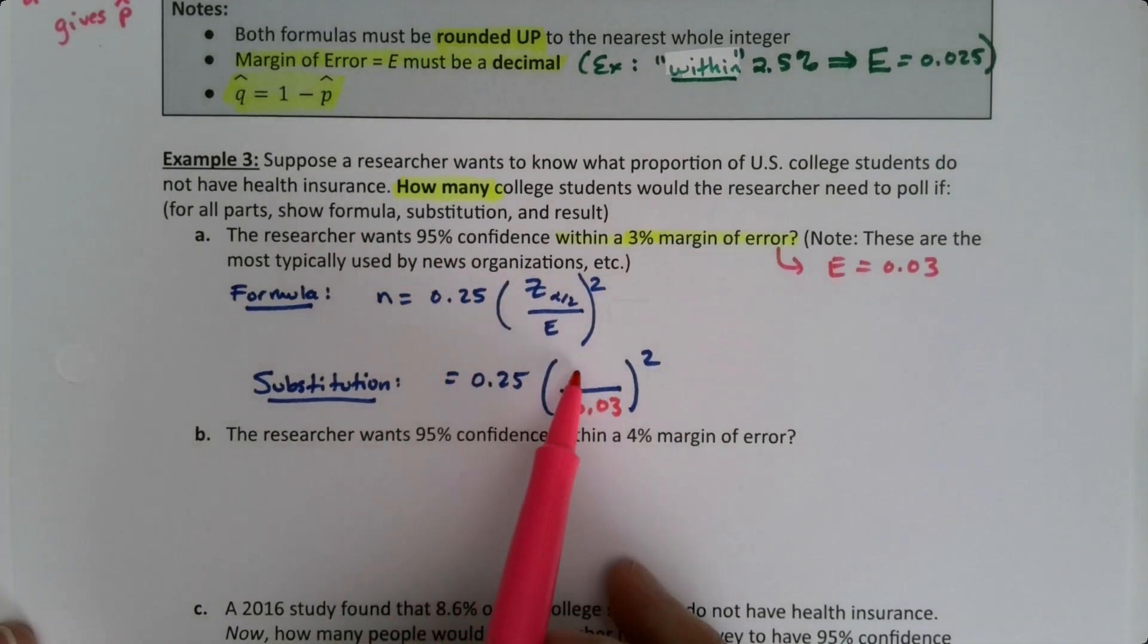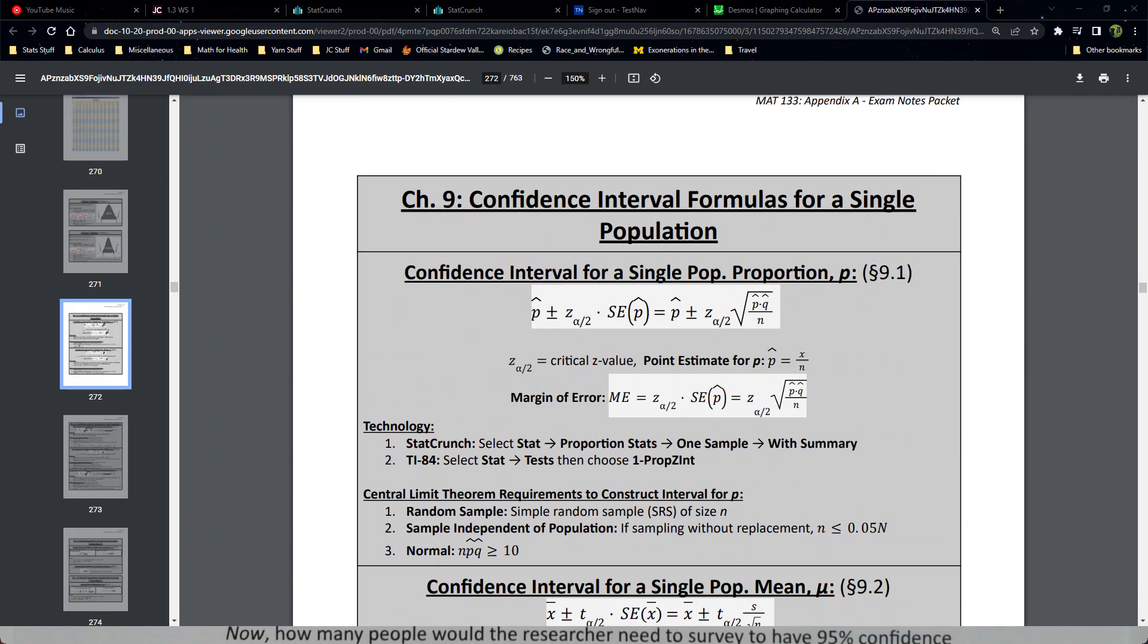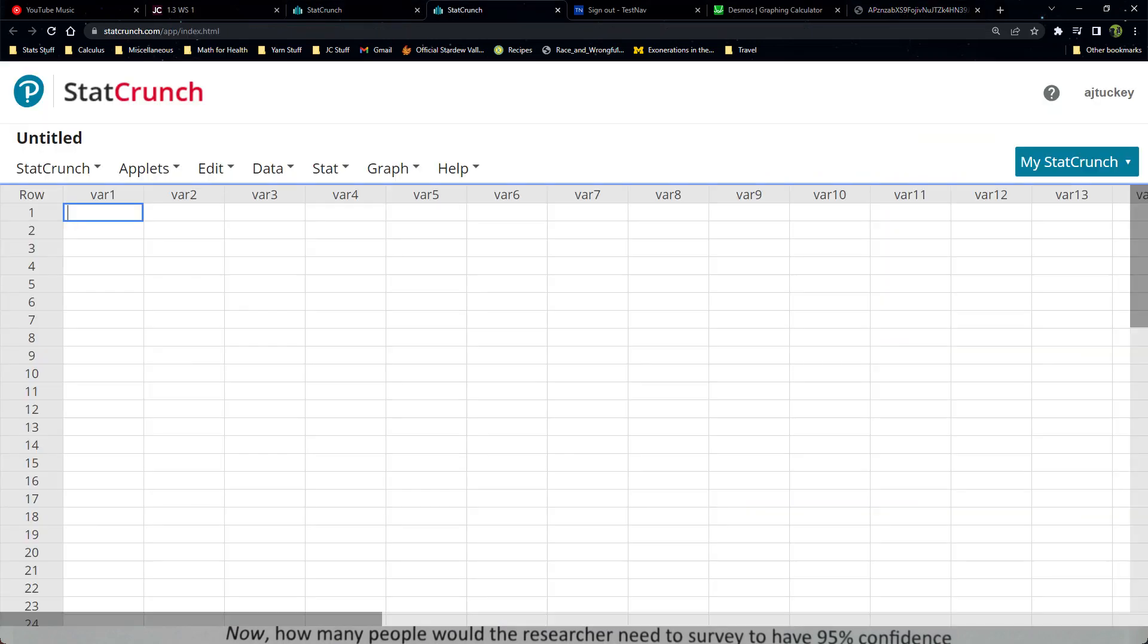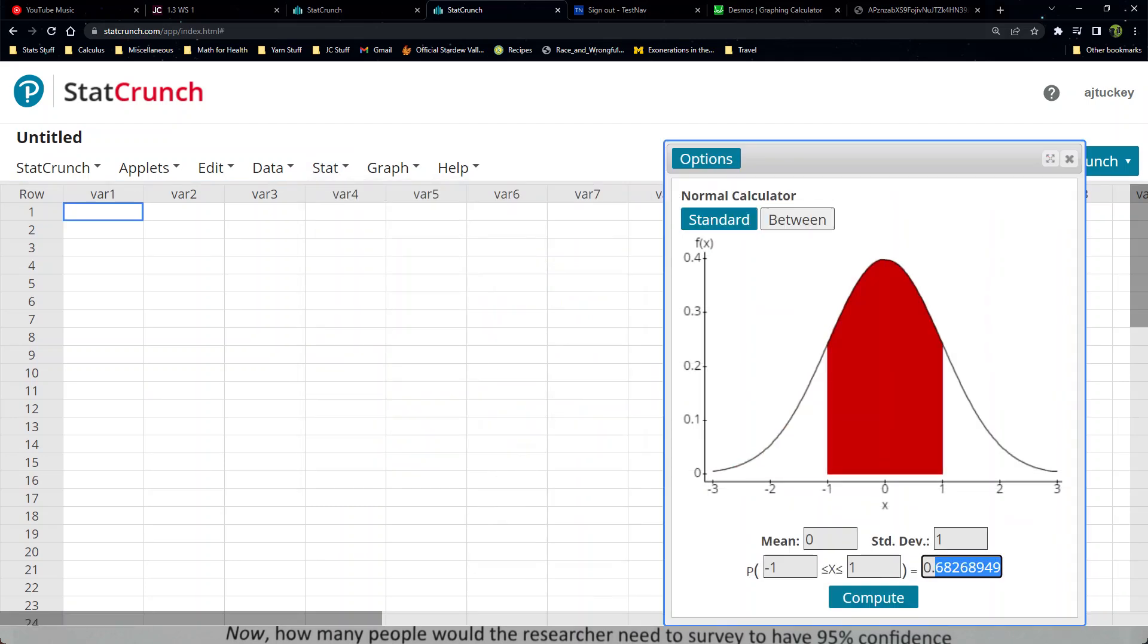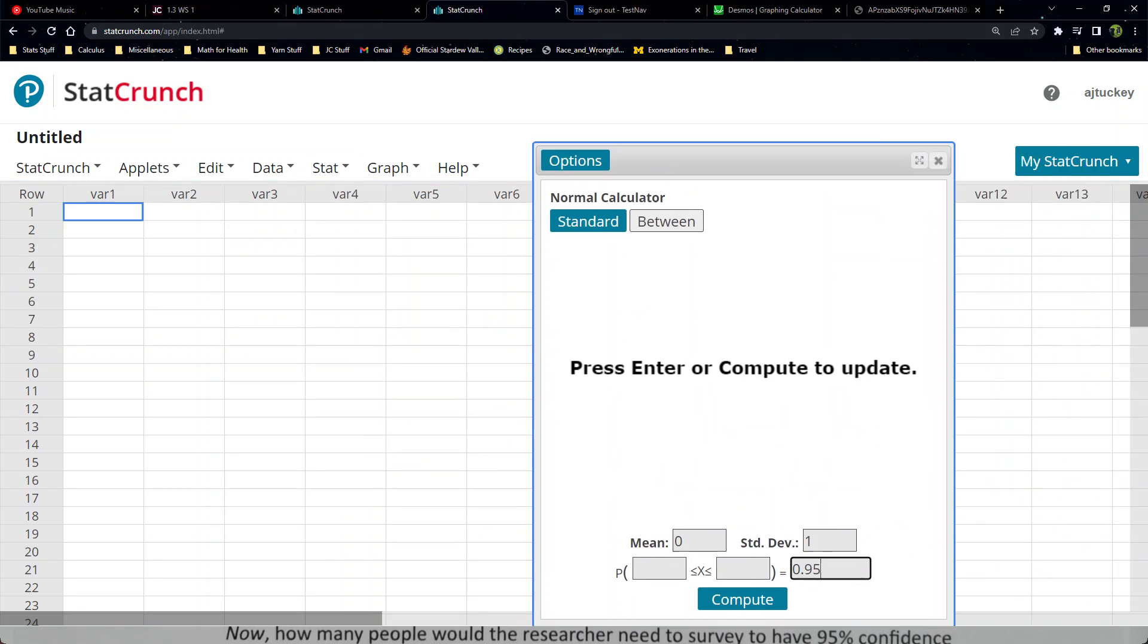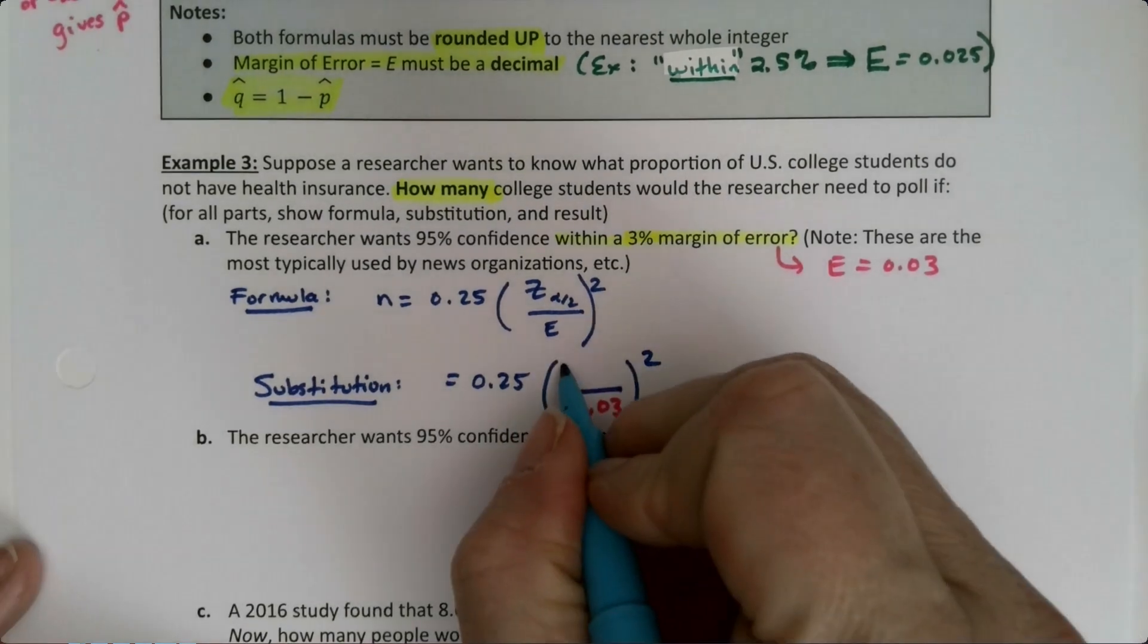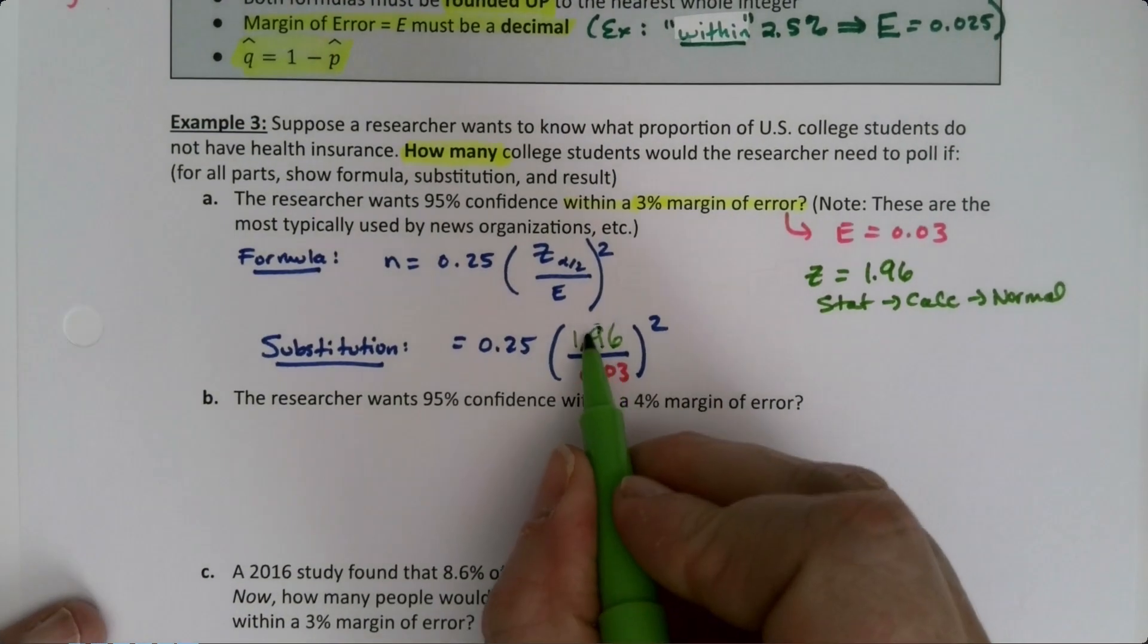The only question is how do I find the z that goes on the top? We learned how to find critical z values in section 9.1. It's in your yellow packet: stat calculators, normal, click between, put your C level in. So I'm going to put my 0.95 in because we had 95% confidence, click compute, and I get 1.96.